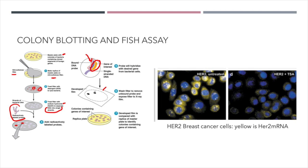I then expose this nitrocellulose filter to x-rays. On the x-ray, the darkened circles indicate colonies of bacteria that contained my gene of interest. So I can now go back to my original plate and since my nitrocellulose filter is essentially just a photograph of the plate itself, I can go back and identify which colonies match my photograph of where the actual gene of interest is located. None of the other colonies contain it because the probe is not showing up on the picture where those colonies were. That's how a DNA probe is used in what's referred to as colony blotting.